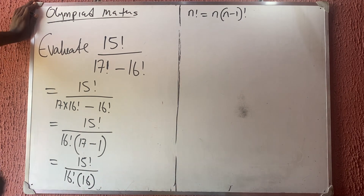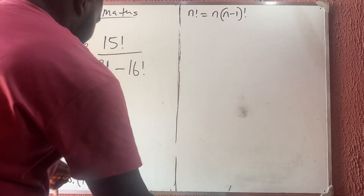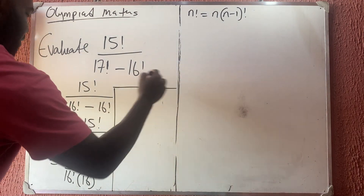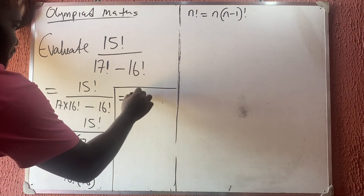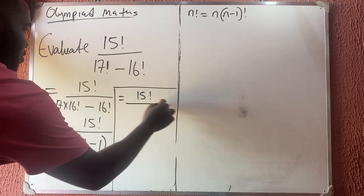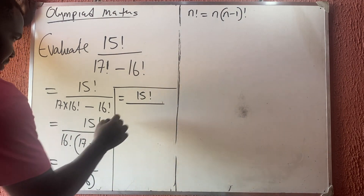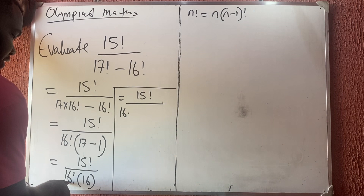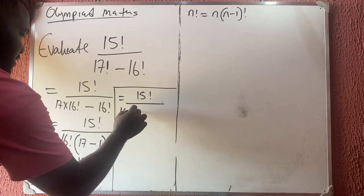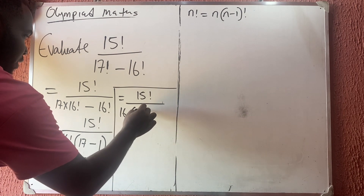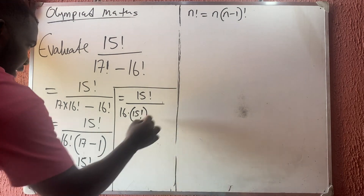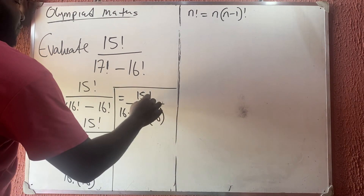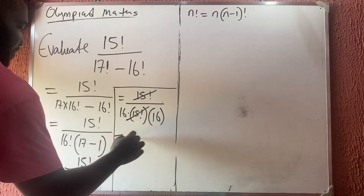So this simplifies to 15 factorial all over 16 factorial, times 16. Now 16 factorial is the same as 16 times 15 factorial. So we have 15 factorial all over 16 times 15 factorial, and there's another 16 already here. If 15 factorial cancels with 15 factorial, I'm left with 1 over 16 times 16.